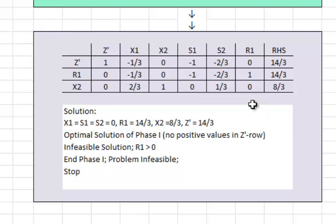As you notice, there is no positive value in the Z prime row. Therefore, optimality condition for this problem has been satisfied and we can't go any further. However, there is a value associated with the R1.